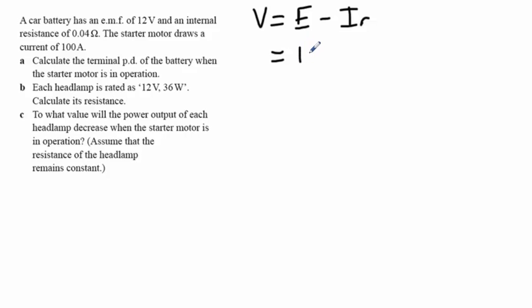So our EMF is 12 volts. That's what would be written on the side of the battery. Take away 100 amps, which is our current, multiplied by our internal resistance of 0.04 ohms, which will give us terminal PD of 8 volts.